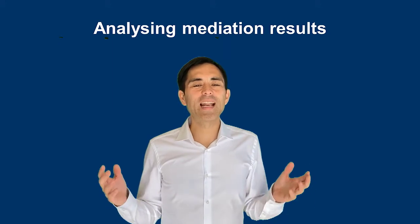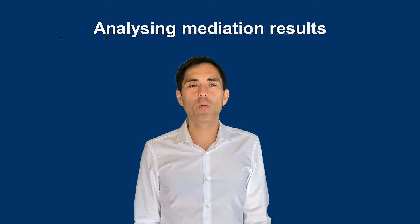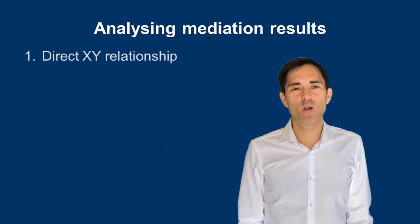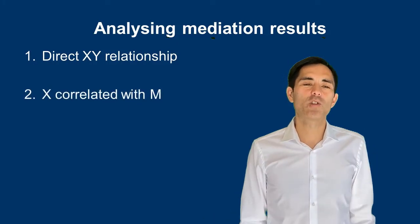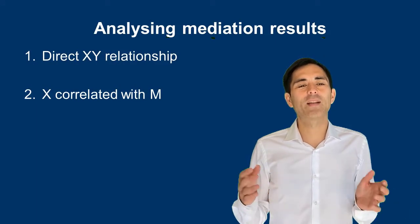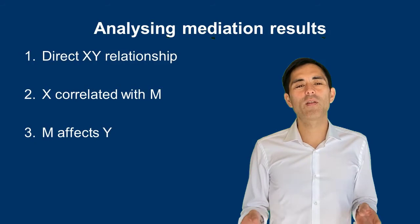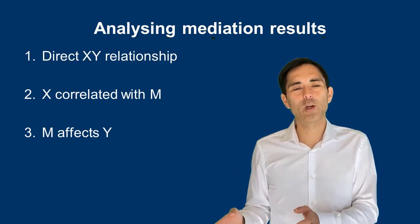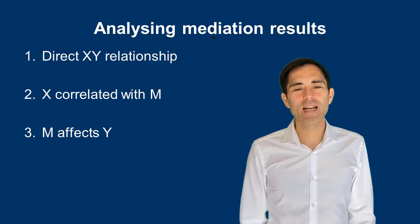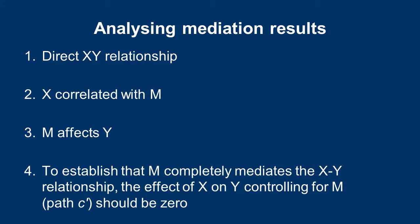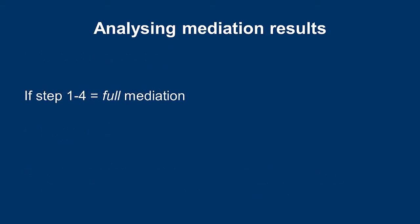When you run your statistical analysis you receive an output of the effects. There are typically four things to look at. First, check the direct relationship between the independent and the final outcome variable. Second, check whether X, the independent factor, is correlated with the mediating factor. Third, check whether the mediating factor affects the final outcome variable Y. Then, to distinguish between full and partial mediation, enter the whole model and check whether M completely accounts for the relation between X and Y. In a full mediation effect, the effect of X on Y should be zero and no longer significant.